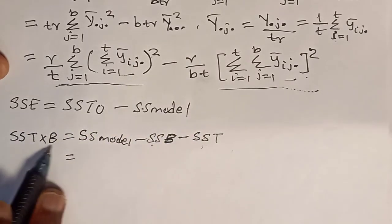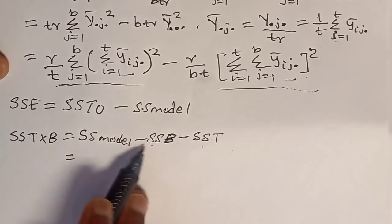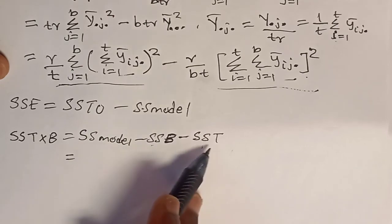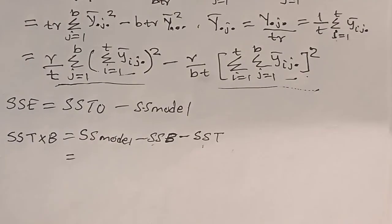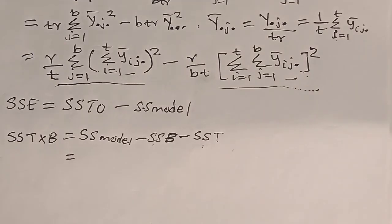Finally, SSE can be calculated as SSTO minus SS model, and SS(T×B) is given by SS model minus SSB minus SST. We'll do a question in the next video for a better understanding, but please watch this video before doing that question.